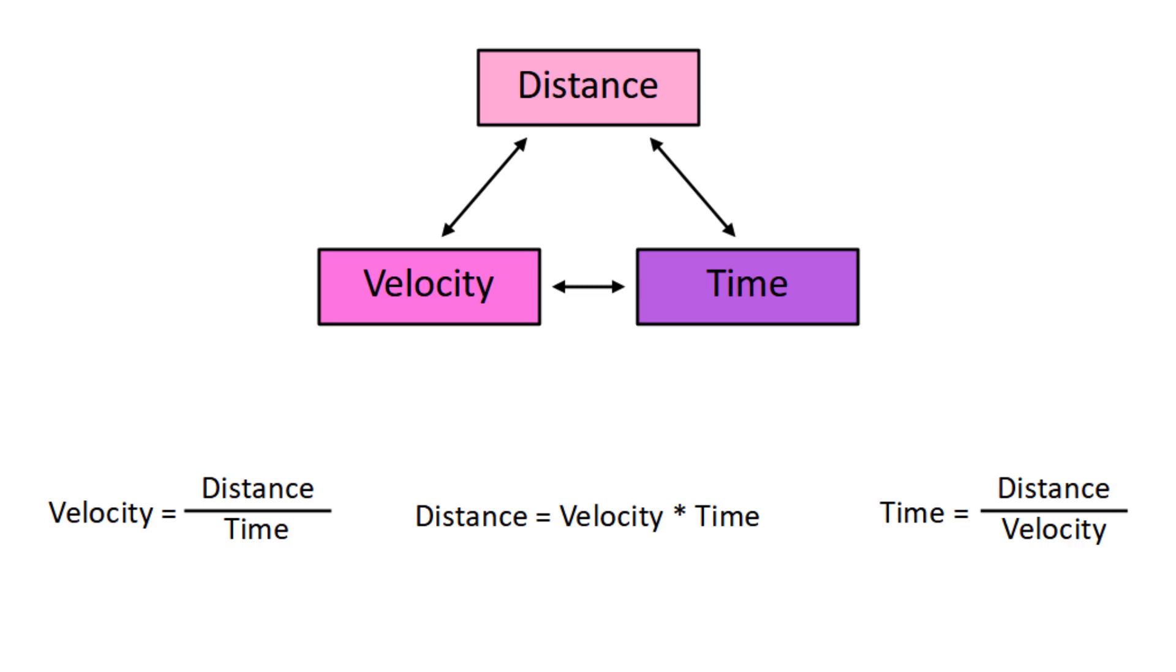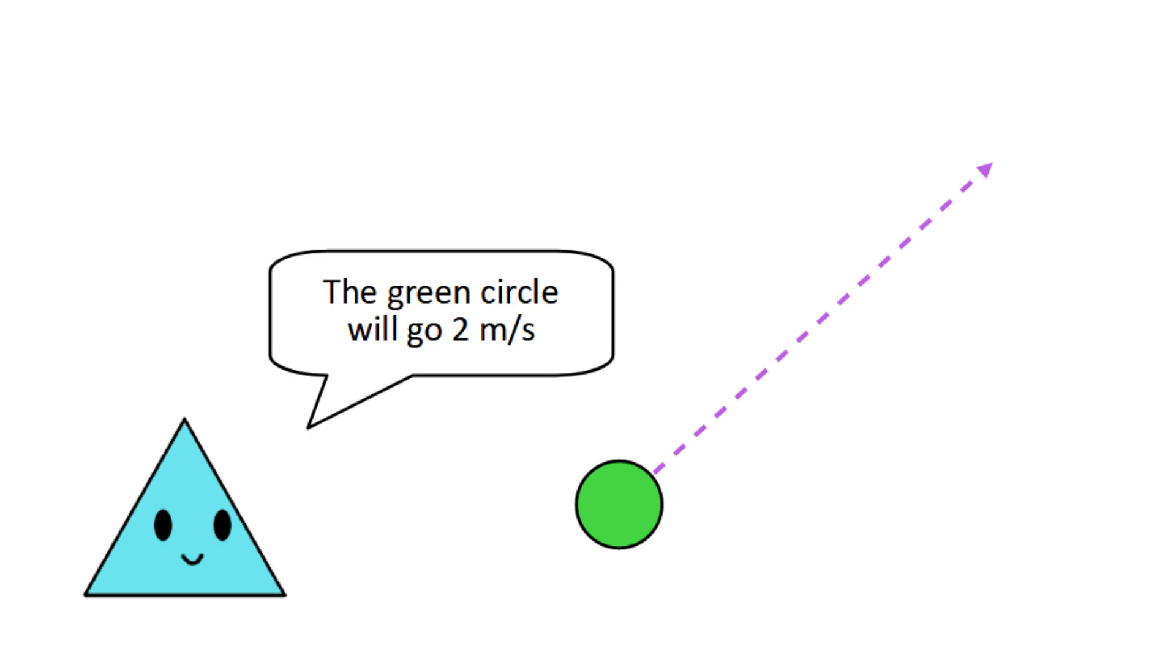This means that an object can travel along a set path, and as long as you know both the distance of the path and the velocity of the object, you can use those to calculate how long it takes to complete the path. Now let's apply that concept to the following situation.